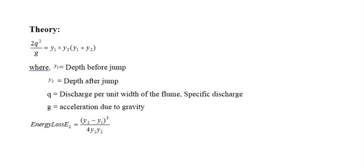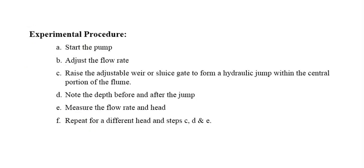The procedure is as follows. First, start the pump and adjust the flow rate in the flume. You can adjust the flow rate using the sluice gate, and also raise the adjustable rear wall or sluice gate to form a hydraulic jump. Then measure the depth before the jump and after the jump. You can also estimate the opening of the sluice gate, and repeat the process for different values of discharge.